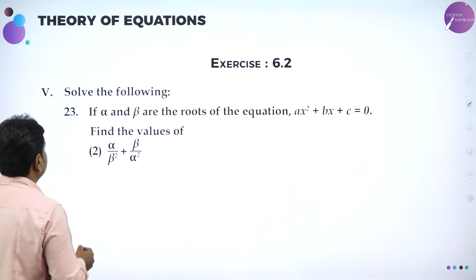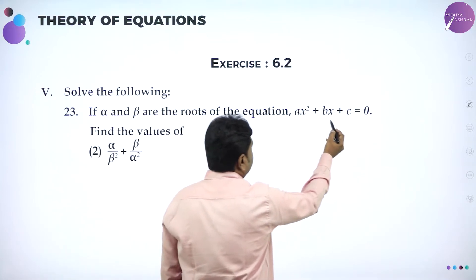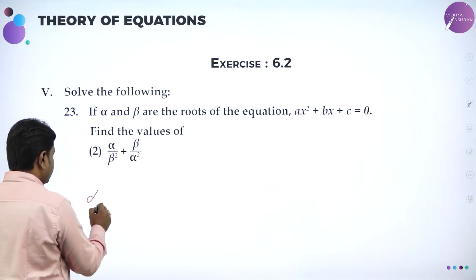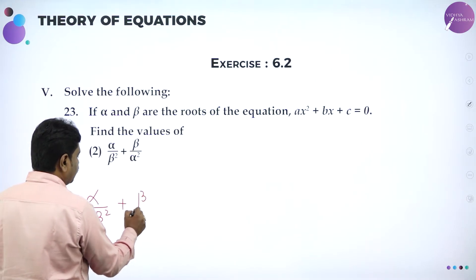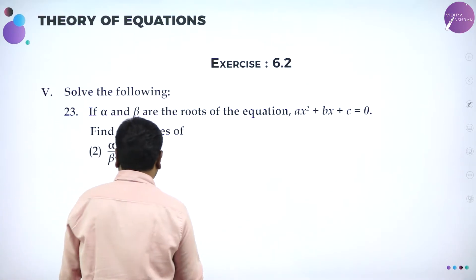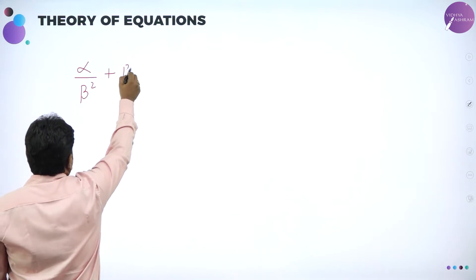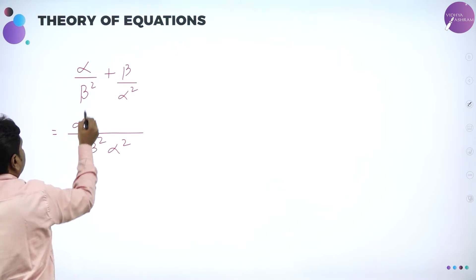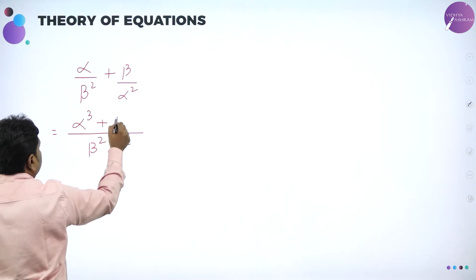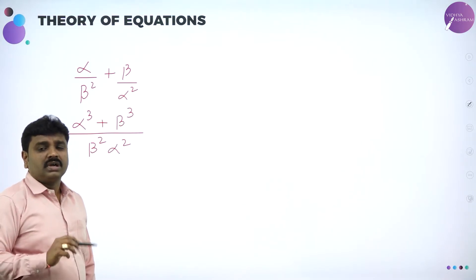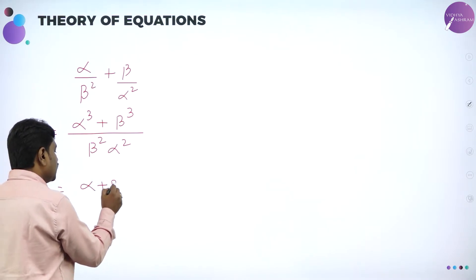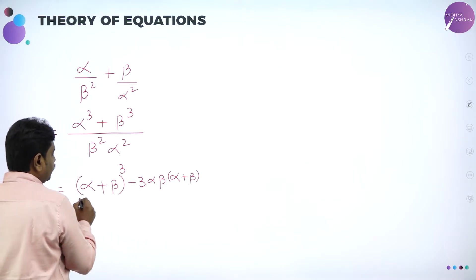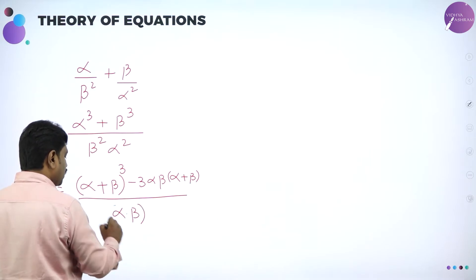Further, if alpha and beta are the roots of the equation AX squared plus BX plus C equal to 0, find the value of alpha by beta squared plus beta by alpha squared. Now we will simplify this. Take LCM: alpha by beta squared plus beta by alpha squared gives alpha cubed plus beta cubed over alpha squared beta squared. The numerator is in the form A cubed plus B cubed, and the denominator beta squared alpha squared can be written as alpha into beta the whole square.